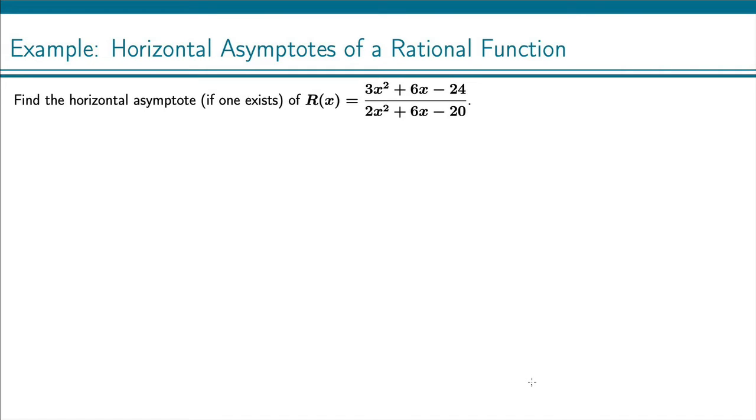So for our horizontal asymptote we care about the leading term of the numerator and denominator. So here in the numerator that's a 3x squared and the denominator that's a 2x squared.